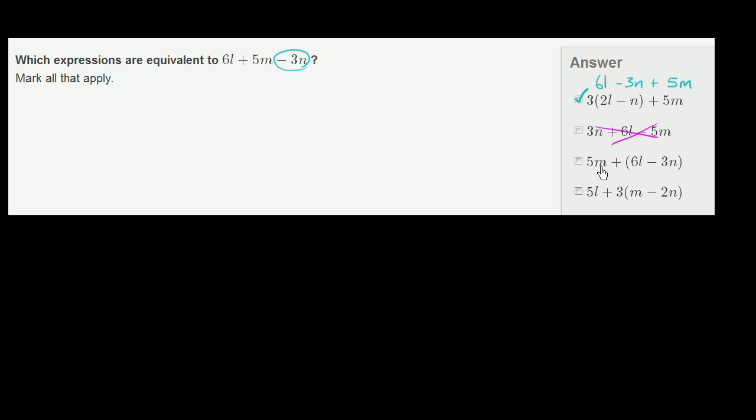So here you have 5m, a positive 5m. Well, you have a positive 5m right over there. Then you have plus 6l minus 3n. And putting these parentheses, these are essentially reassociating what operation I would do first. But you could actually remove the parentheses here and it won't change the value. You could think about it as distributing the positive sign or distributing the positive 1 here. It would just become 5m plus 6l minus 3n, which is just a reordering of this right over here, but it's completely legitimate.